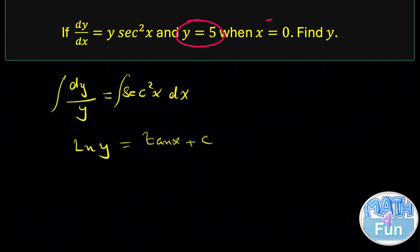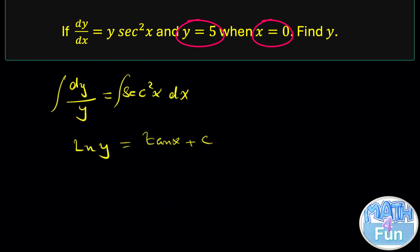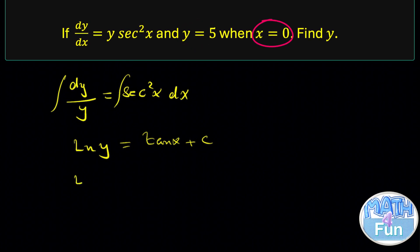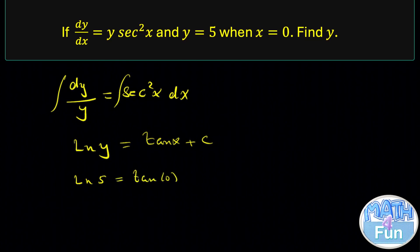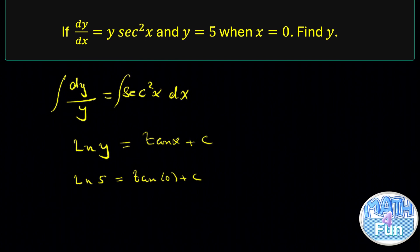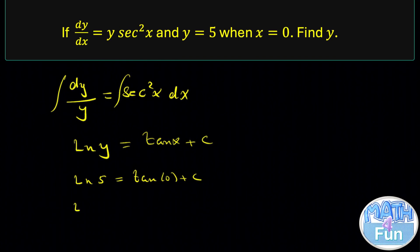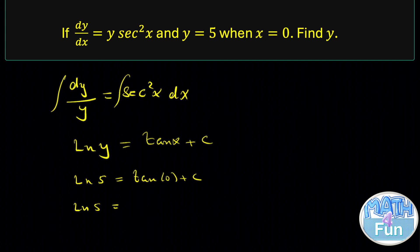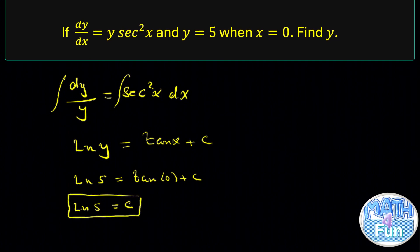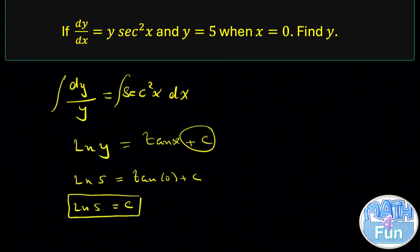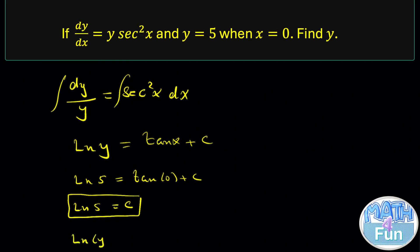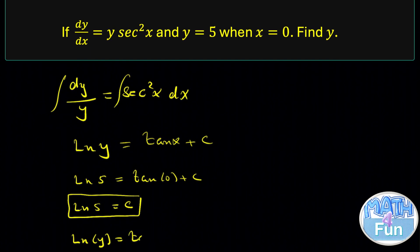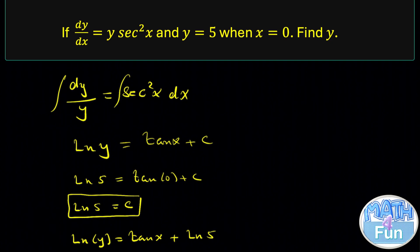Now, they gave us y = 5 when x = 0. So we can say ln 5 here, replacing y by 5. So ln 5 = tan(0) + C. And you know that tan 0 = 0, which means that ln 5 = C. So we got the constant. We can replace it in the main equation. We can say that ln y = tan x + ln 5.